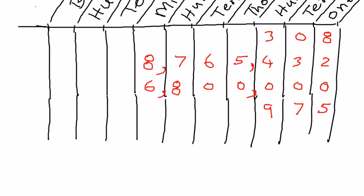Let's take another example. This time we have the digits two, two, seven, one, nine. Two is in the ones place, two is in the tens place, seven is in the hundreds place, one is in the thousands place, and nine is in the ten thousands place. So therefore, the way we read this number is ninety-one thousand seven hundred and twenty-two.